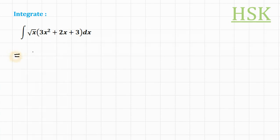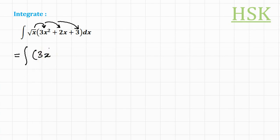First, what we need to do is simplify this bracket by multiplying the √x term into each of the terms of this function. So we get 3x²√x + 2x√x + 3√x.